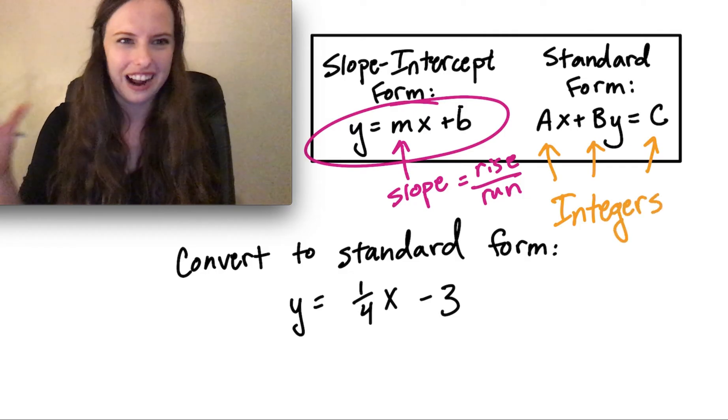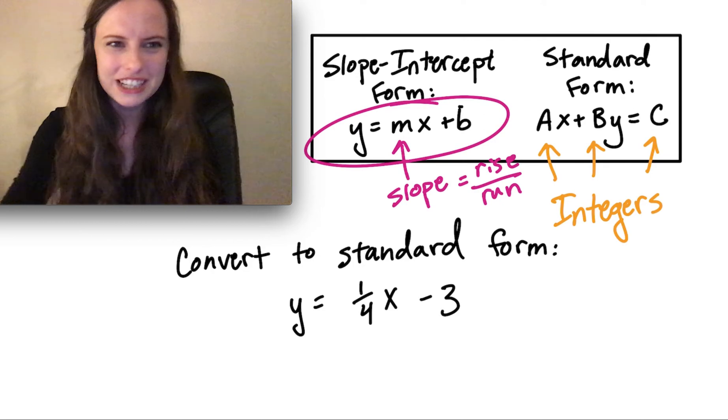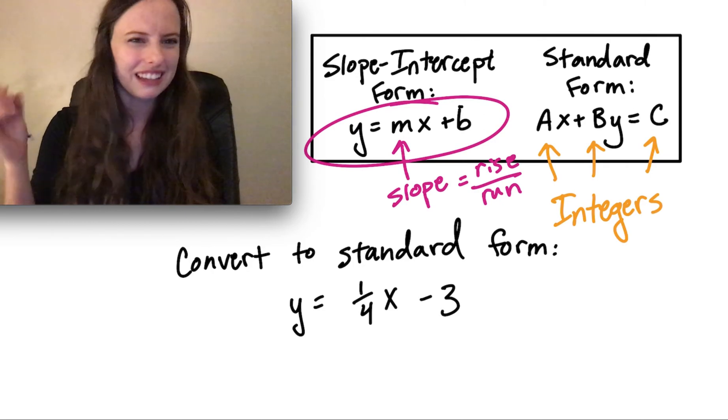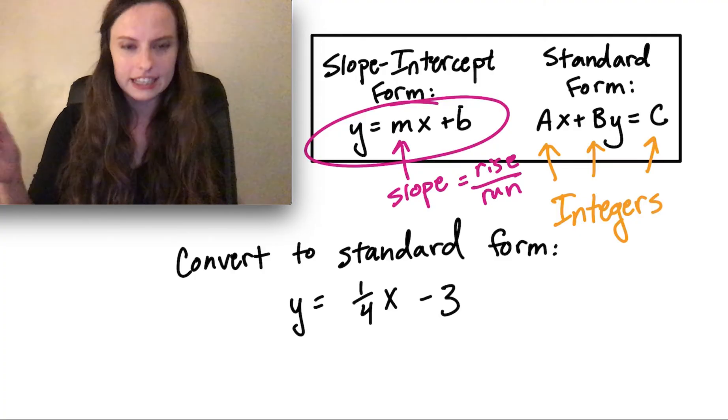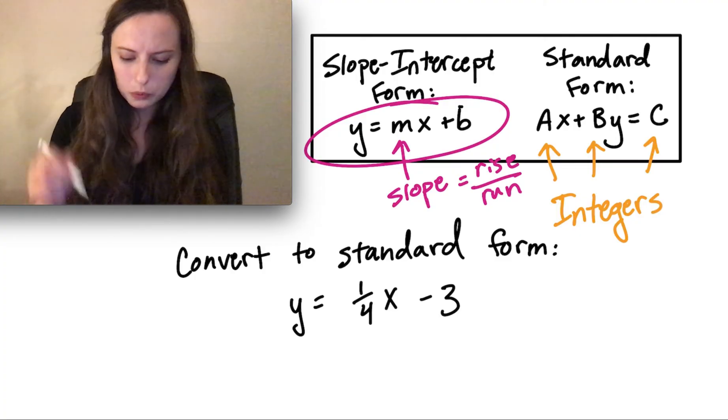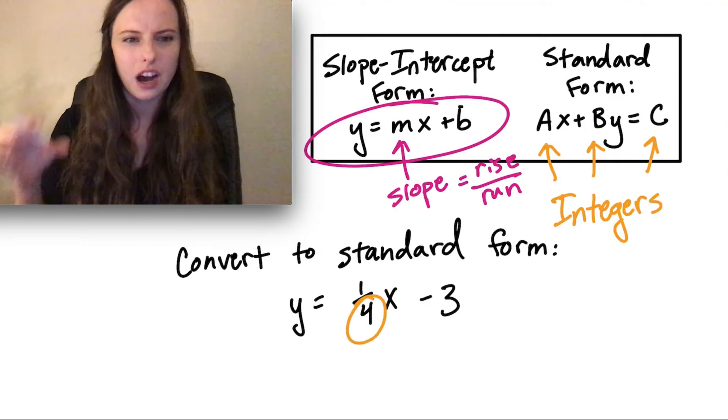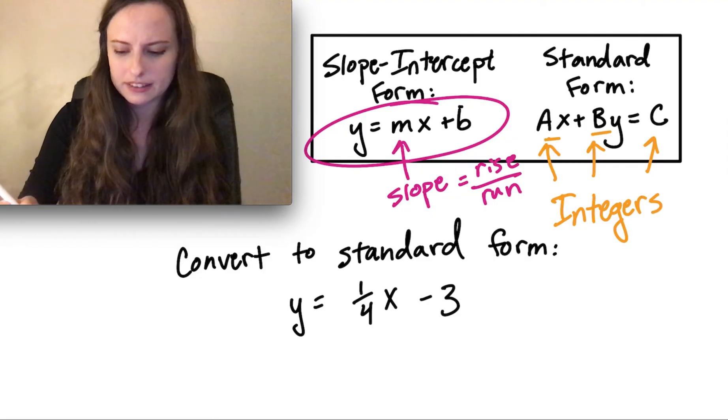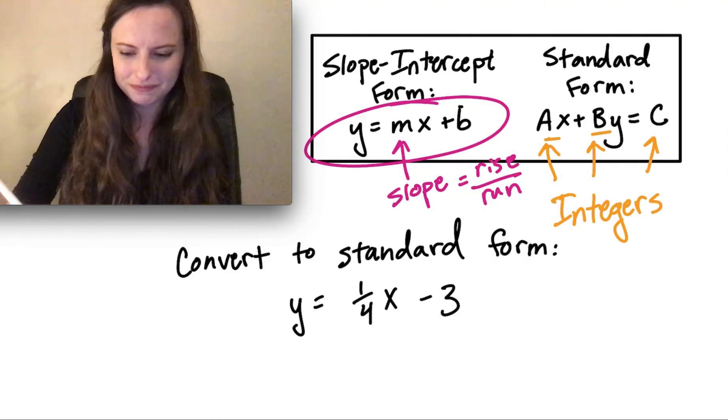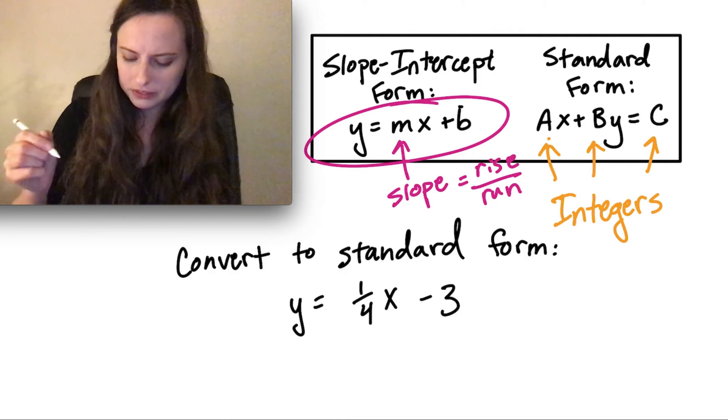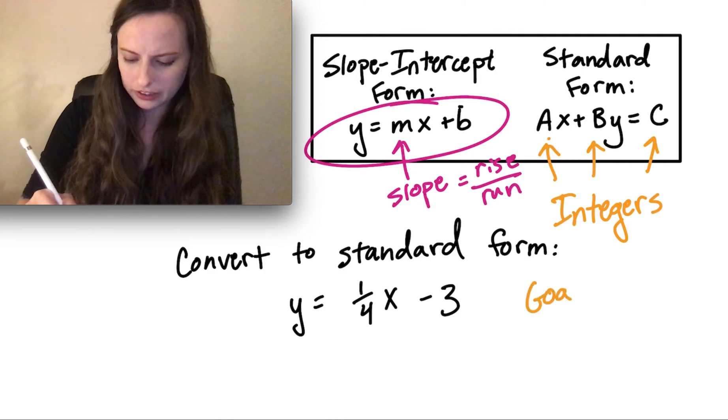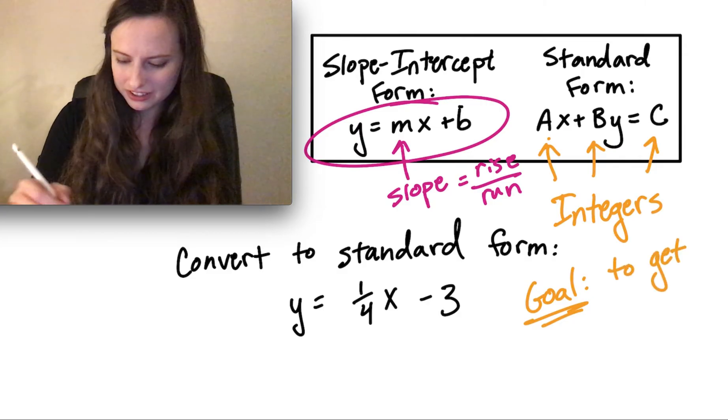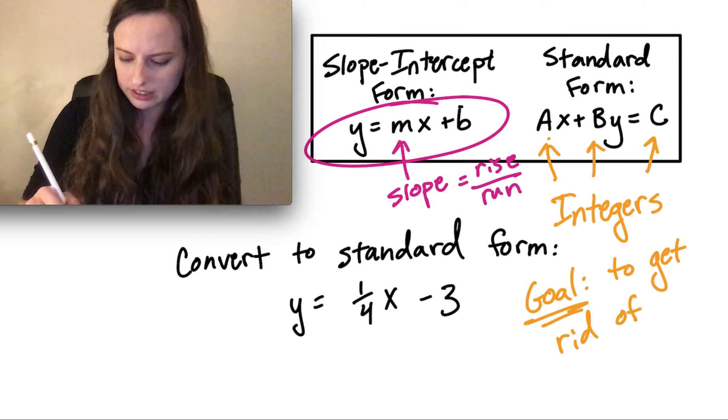That just means that they're not fractions. So you can have 1, 2, 3, 4, or negative 1, negative 2, negative 3. You can have 0, but you can't have fractions in standard form. So what that means is we need to eliminate the denominator in this fraction so that all of our coefficients, the a, b, and c, are all integers. So how do we do that? Our goal here is to get rid of denominators.